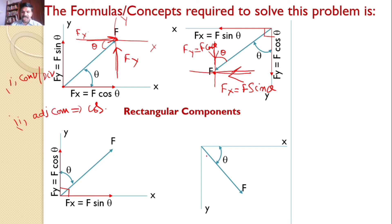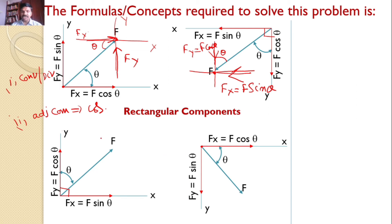For the last case, there is a force making angle theta with the x-axis. Since this force is divergent, the component forces are also divergent. This force makes angle theta with the x-axis, so the x-component becomes F cos theta and the y-component becomes F sin theta. These are the rectangular components.